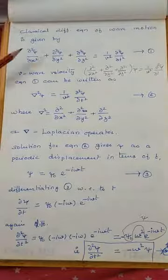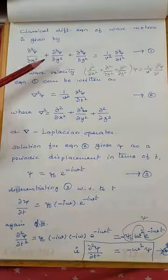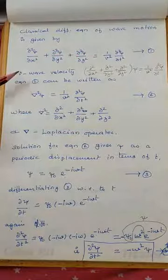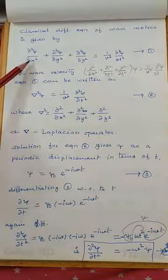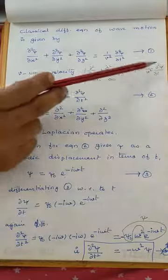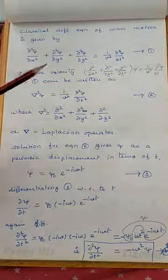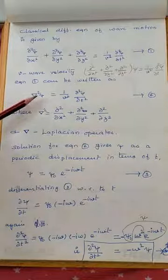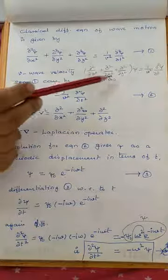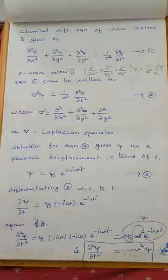Let us consider the classical differential equation of wave motion. It is a second-order differential equation: ∂²ψ/∂x² + ∂²ψ/∂y² + ∂²ψ/∂z² = (1/v²)(∂²ψ/∂t²), where v is the wave velocity. We may write the left-hand side as ∇²ψ, so the equation becomes ∇²ψ = (1/v²)(∂²ψ/∂t²). Here ∇² (del squared) is the Laplacian operator, and this is a second-order differential equation written using the Laplacian operator.